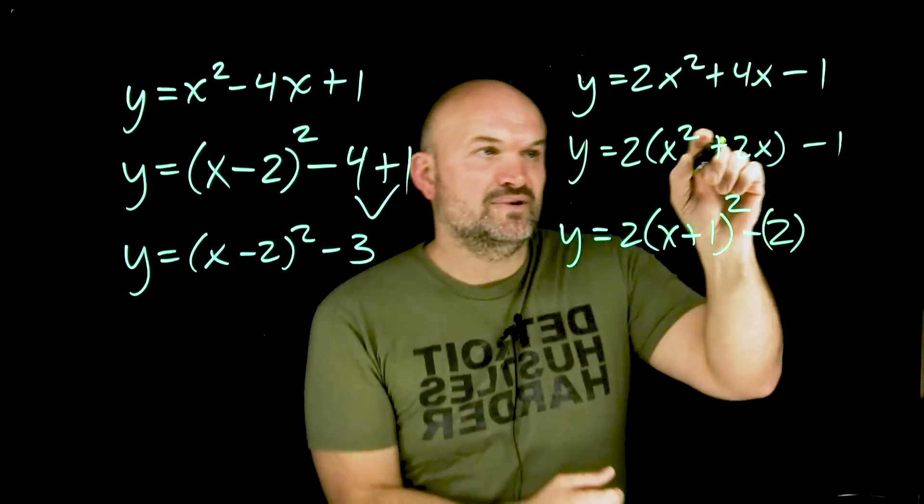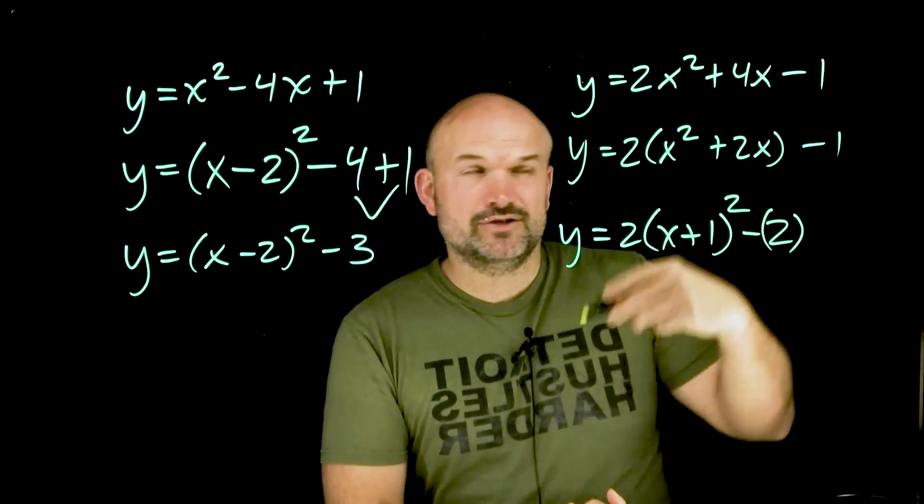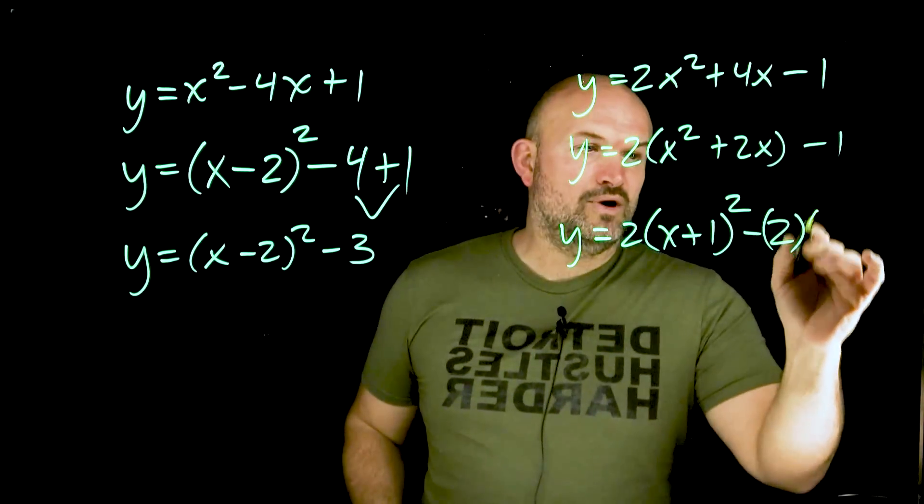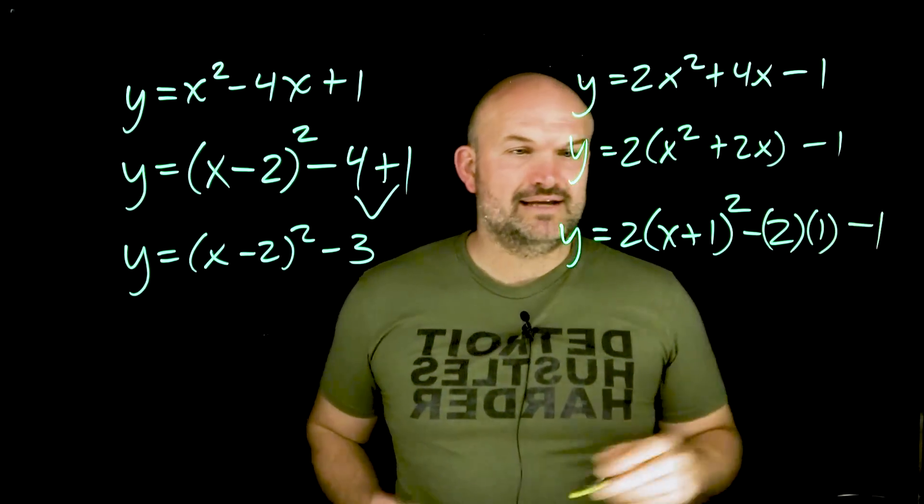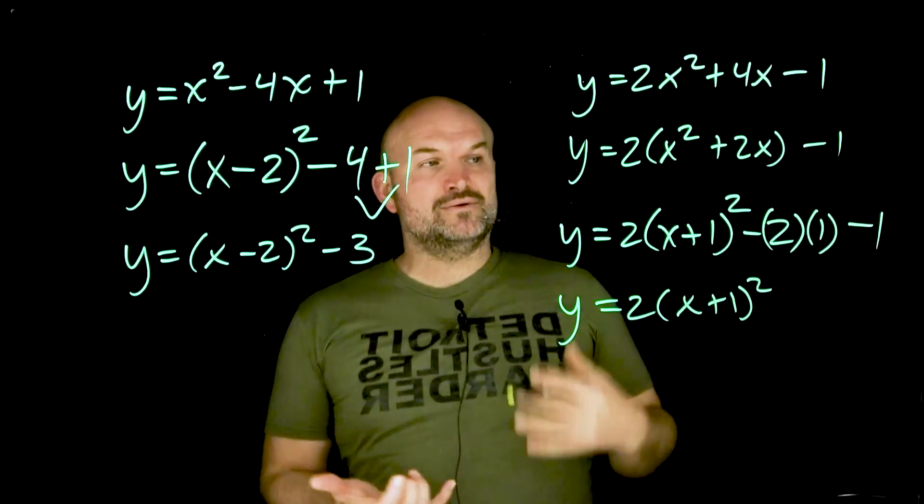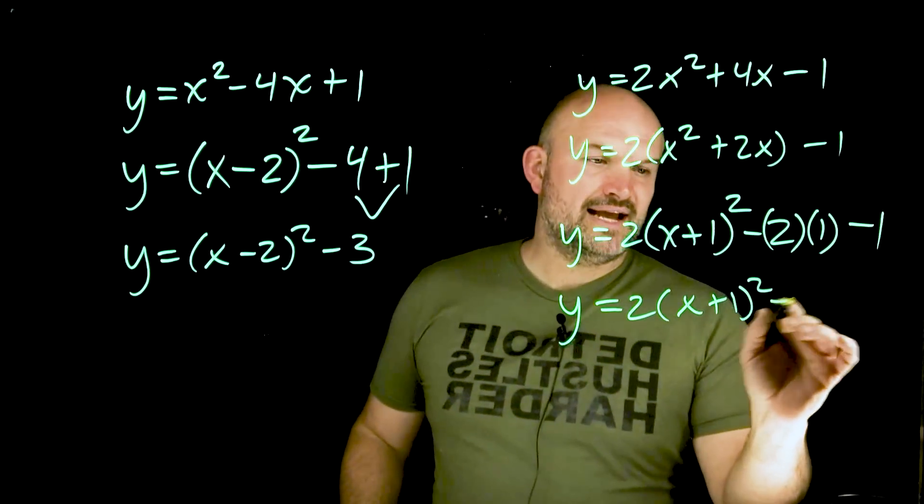And again, how do we identify what we write here? We simply just take our middle term, divide it by two, and square it. So, two divided by two is one, one squared is going to be a one, and then we still have our c. So, now, we can just go ahead and simplify everything. So, negative two times two is a negative two, negative two minus one is going to be a negative three.